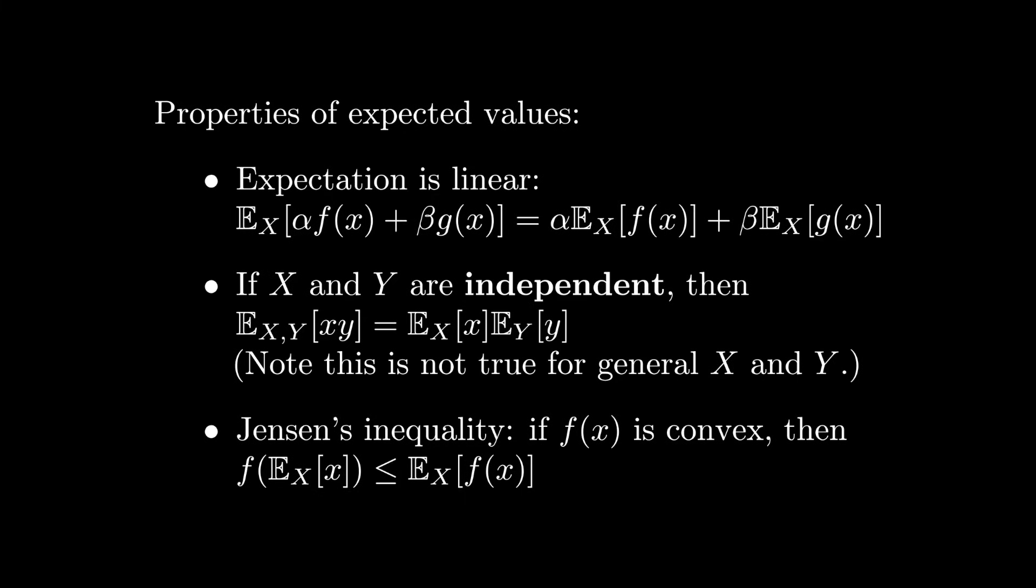Another property of expected values that comes up a lot in machine learning is Jensen's inequality. It says that a convex function applied to an expectation is always less than or equal to the expectation of that function.